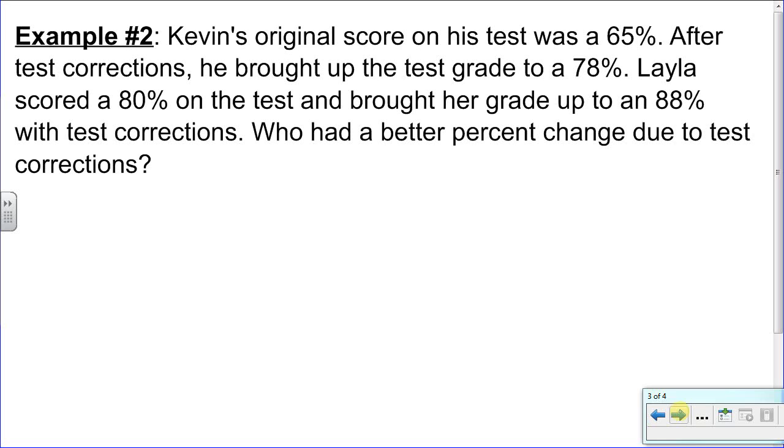First let's focus on Kevin. Kevin went from a 65% to a 78%. Again, the first thing we want to find out is the actual amount that changed. A little subtraction here will show us that he increased by 13 percentage points. But again we need to compare that to the original value which in this case was 65%.